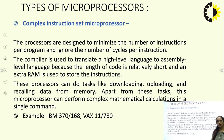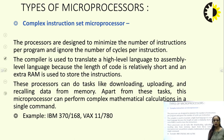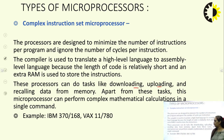In a CISC processor, a compiler is used to translate a high-level program to assembly language because the length of code is relatively short, and extra RAM is usually used to store the instruction. These processors can perform tasks like downloading, uploading, and recalling data from memory, and can handle complex mathematical operations in a single command. Examples include IBM 370/168 and VAX 11/780.